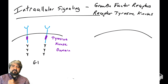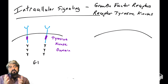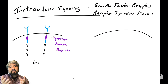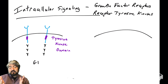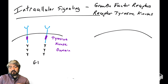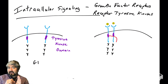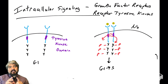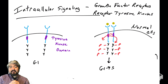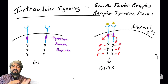Growth factor receptors are proteins that are in the plasma membrane. They have a ligand binding domain in the extracellular region. The intracellular region has a tyrosine kinase domain typically, and tyrosine residues in the cytoplasmic tail. Upon ligand binding, that triggers dimerization and transphosphorylation of those tyrosines in the tail, which is a key signal in getting cells to go from G1 phase into S phase.